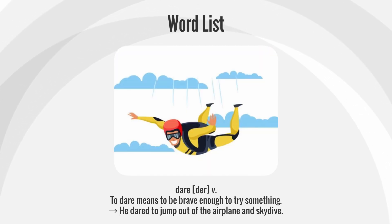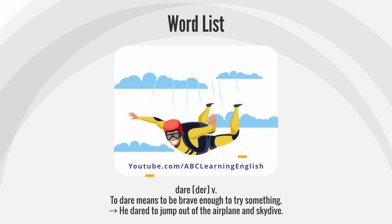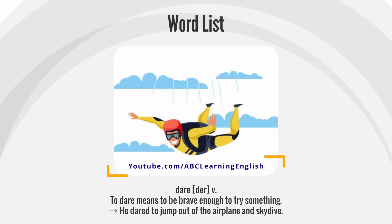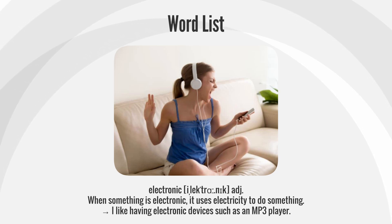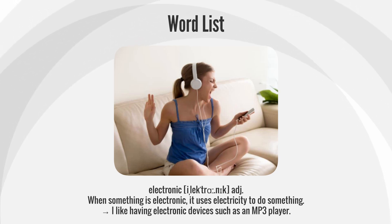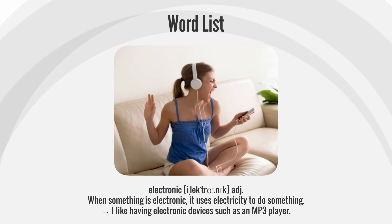Dare — he dared to jump out of the airplane and skydive. Electronic — when something is electronic, it uses electricity to do something. Example: I like having electronic devices such as an MP3 player.